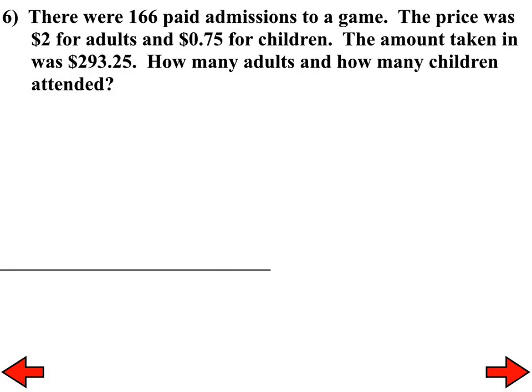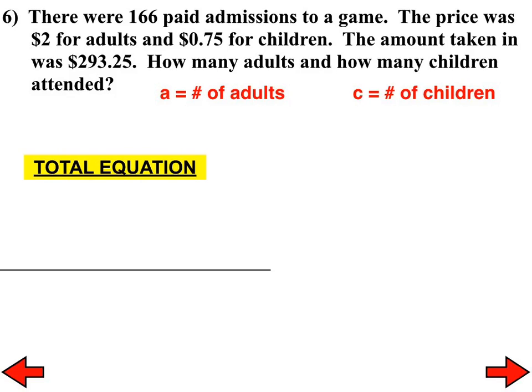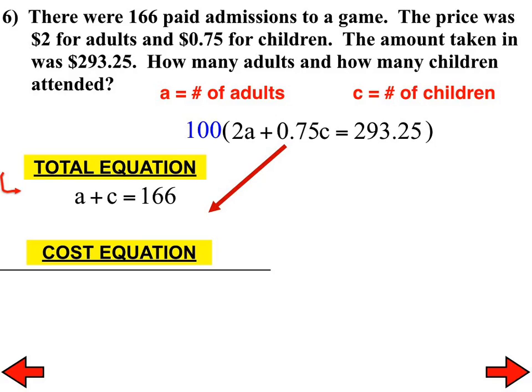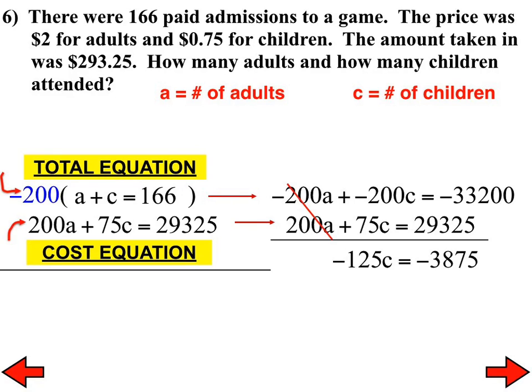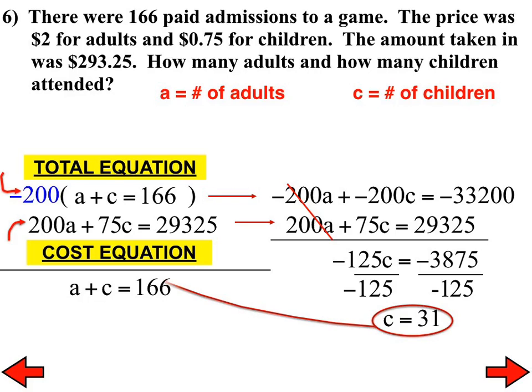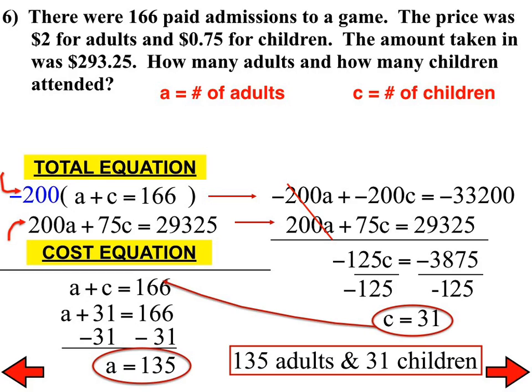Number 6, really the same exact type of problem. I'll use A for adult, C for children. Here is my total equation. There is the original cost equation. I'm going to quickly multiply it by 100 to give me this, and then I'm going to multiply the top equation by negative 200, add straight down. I get this. I'm going to divide both sides by negative 125. I noticed that some of you did leave everything with decimals, and so you ended up with decimals in here, which is fine, whatever works for you. 31 children and 135 adults. Any questions? All right, we are finished.